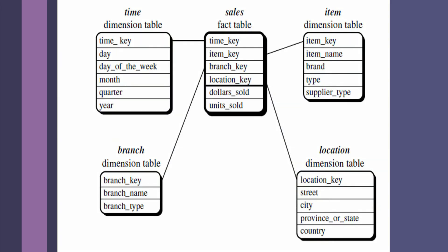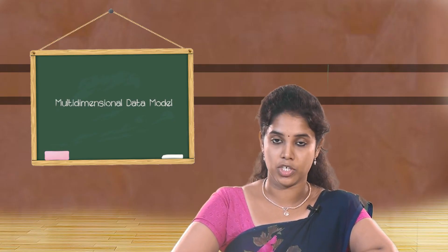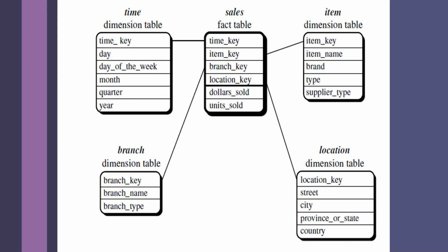Here is another example representing star schema. There is a single fact table located at the center, consisting of different keys such as time key, item key, branch key, and location key. It also consists of facts such as dollars sold and units sold. Considering the item key, it points to the dimension table item, which gives further information regarding the dimension item, such as item name, brand, type, and supplier type.